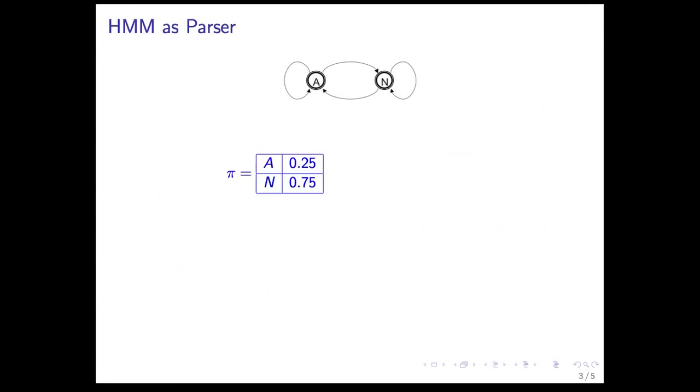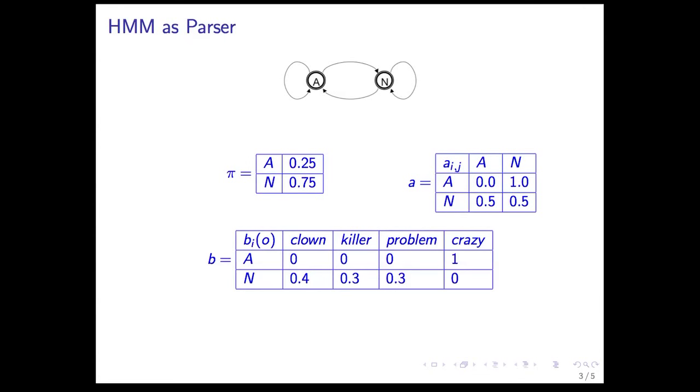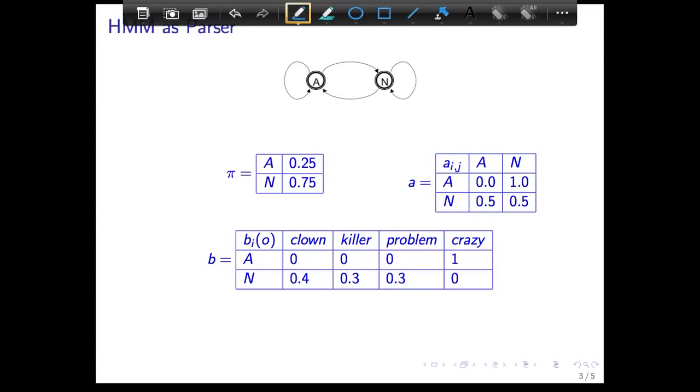So if you look at the HMM, you can describe it using these tables. So there's a start state, a start probability table, the transition table. And remember, this is written as P of N given A, and P of A given A.